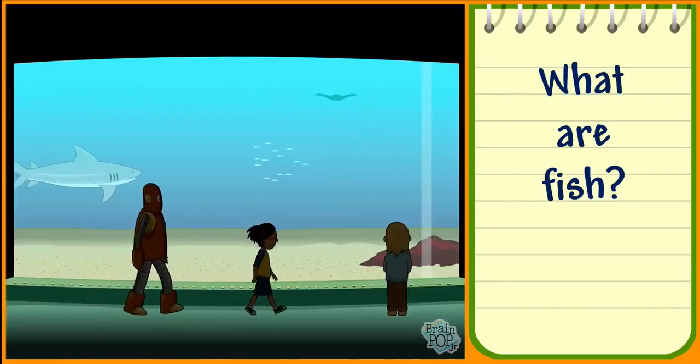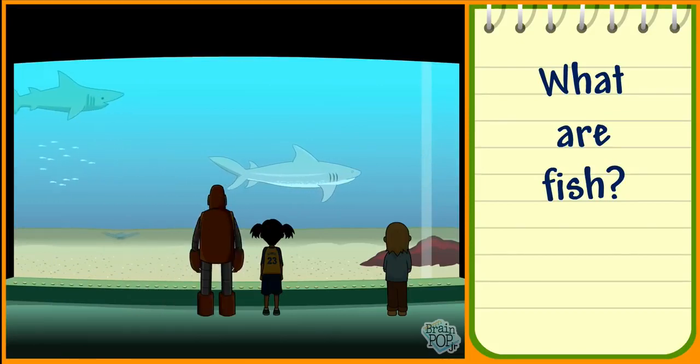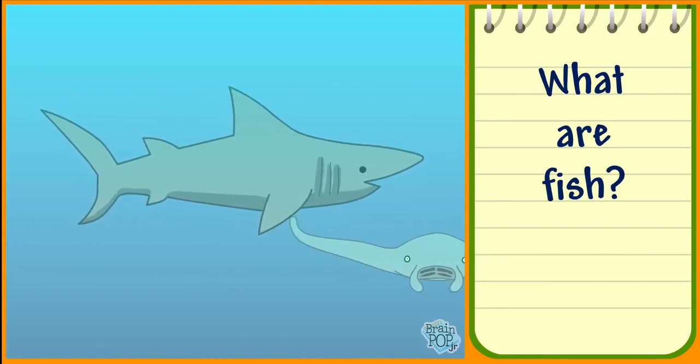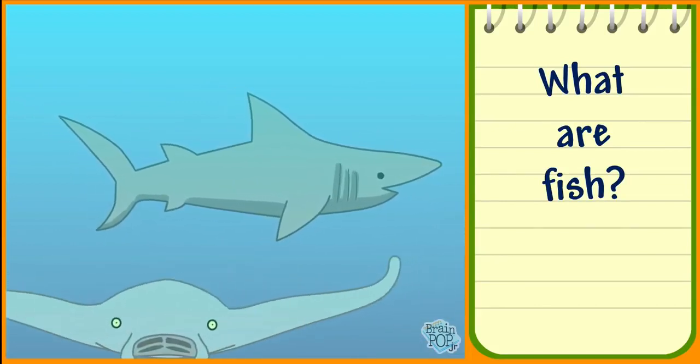Sharks and stingrays are also fish. They have gills, but they don't have scales. Their bodies are made out of cartilage.